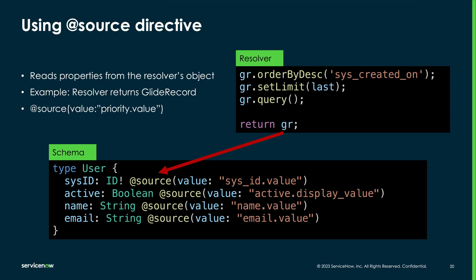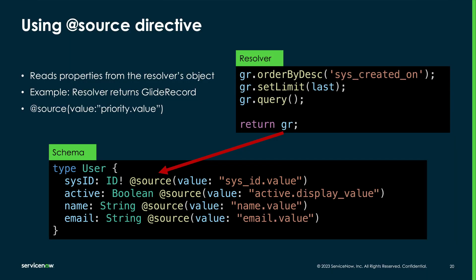Now, check out the active field. It's a boolean, and the value of booleans on the platform is 0 and 1. But the display value is used to provide a true or false in this case.